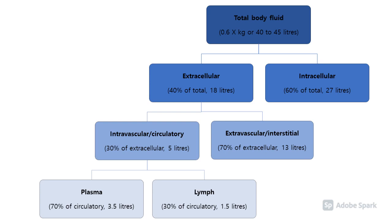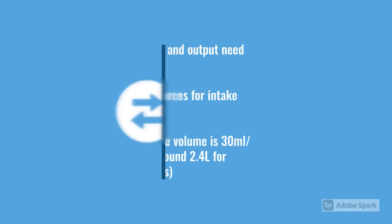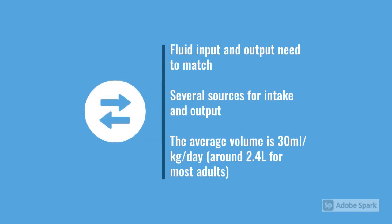We're really interested in the circulatory, intravascular fluid, because that's what's actually going to be perfusing our brain and perfusing our organs — so we're talking about the plasma and the lymph. In the average adult that's going to be about five litres, and those are the things we're going to have most impact on when we're giving fluid boluses. The other thing we need to consider is our normal intake and output.